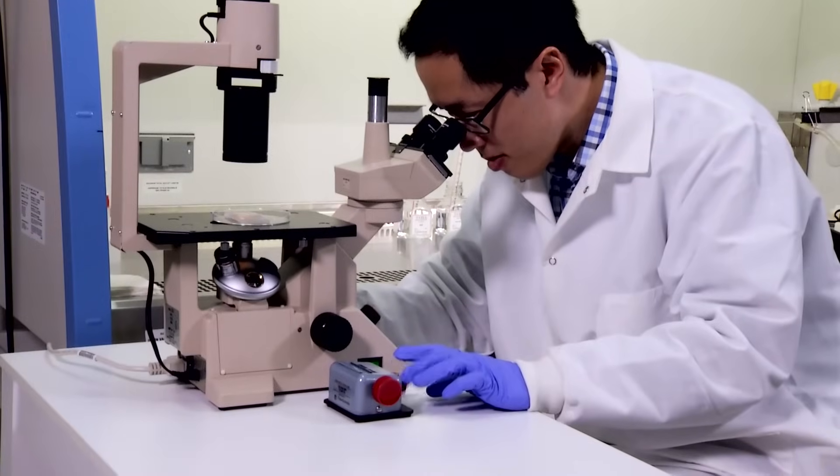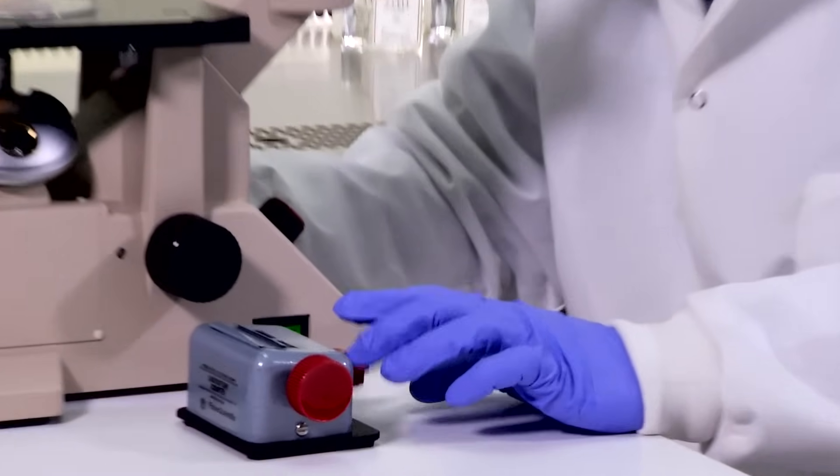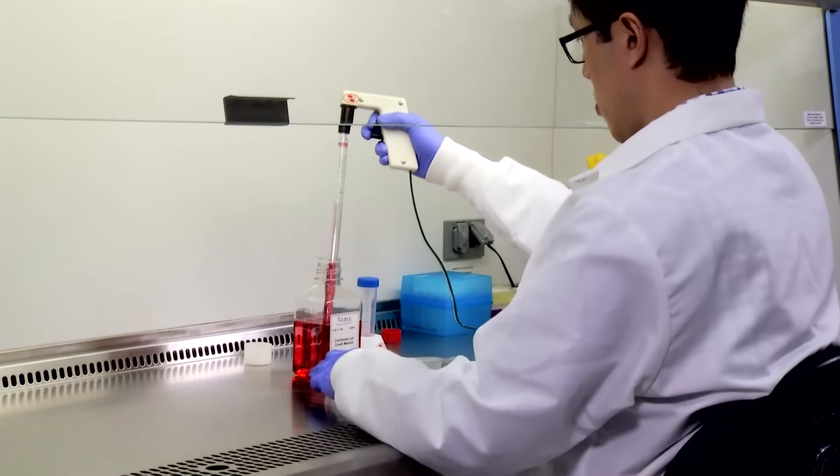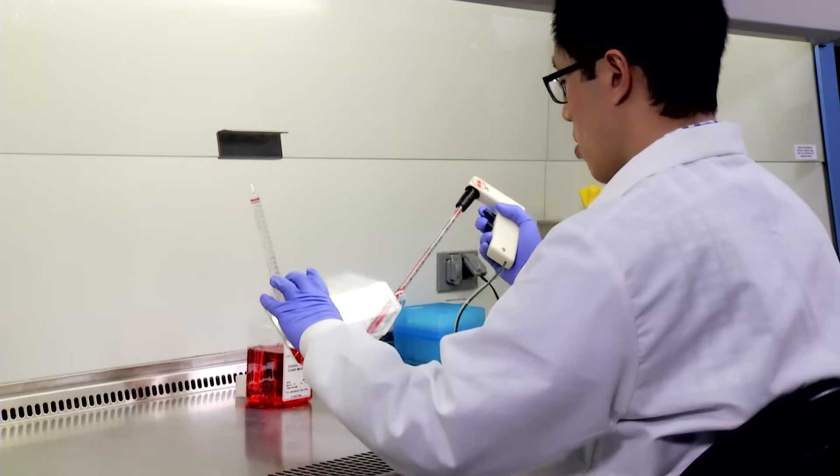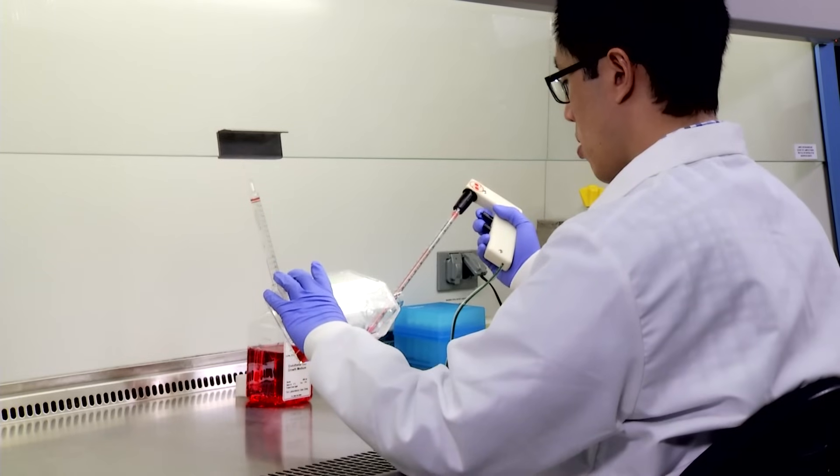Count cells with hemocytometer or cell counter. Pipette 30 ml growth medium into T175 flask. Transfer to flask at 5,000 cells per square centimeter.